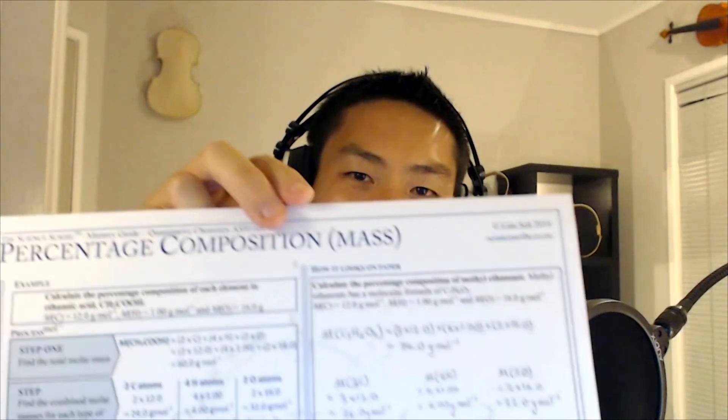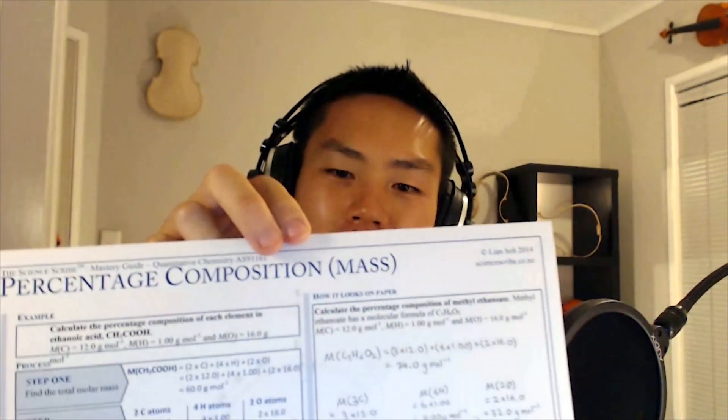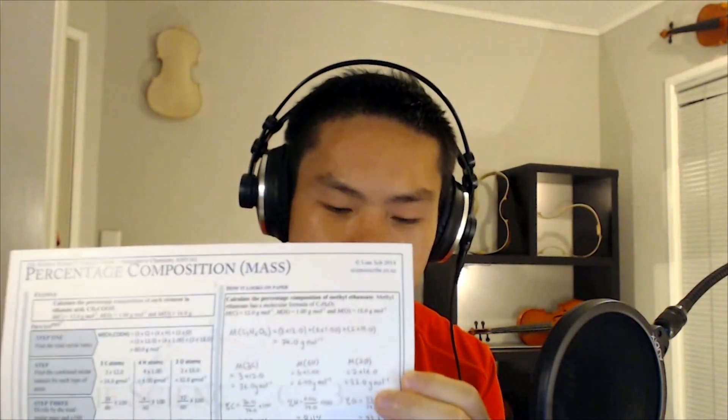In this tutorial we're going to be looking at percentage composition by mass. This tutorial has been made with reference to this mastery guide here which you can download for free from sciencescribe.co.nz. It just teaches you how to calculate percentage composition by mass.